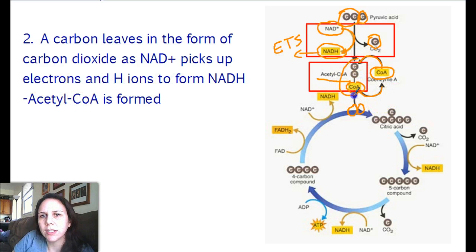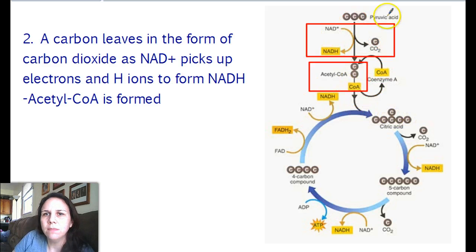So acetyl CoA is formed and that's this guy right here in the middle who's now ready to enter. So one more time, one carbon falls off and leaves, the other two carbons get some electrons picked up from it and NADH is made. Coenzyme A comes on and forms acetyl CoA with the two carbon molecule.